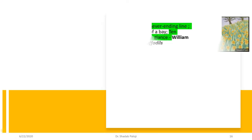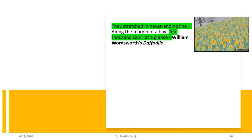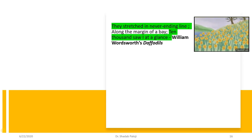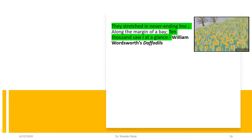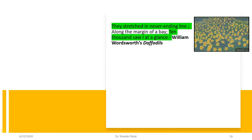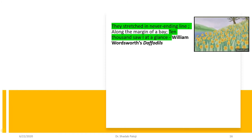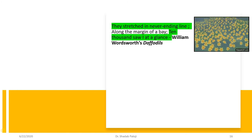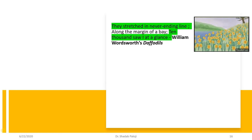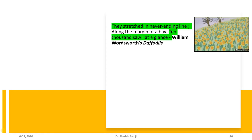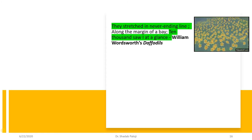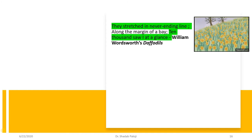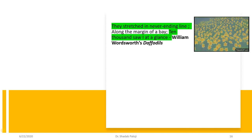Now they stretched in a never-ending line along the margin of a bay, then ten thousand saw I at a glance. This is from 'Daffodils,' a very well-known poem to everyone who has studied English in school, typically from 8th to 10th standard. It's a nature poem written by William Wordsworth, and the poem has many such statements that help us visualize what the poet is actually trying to say.